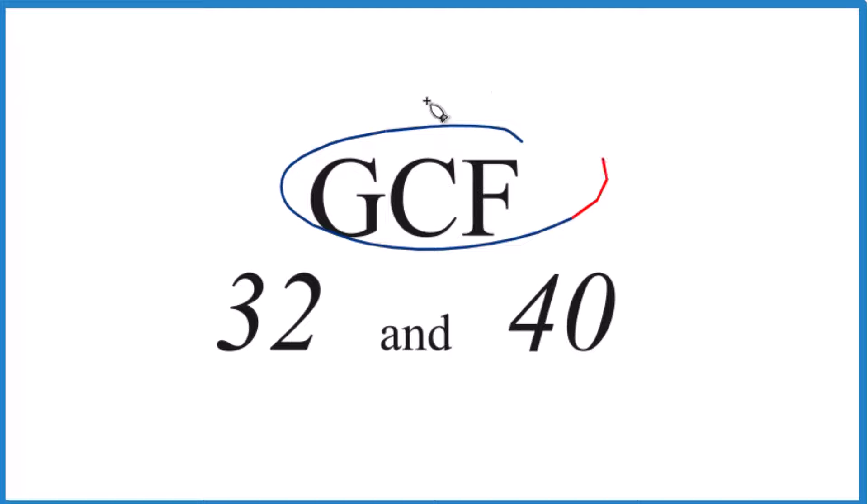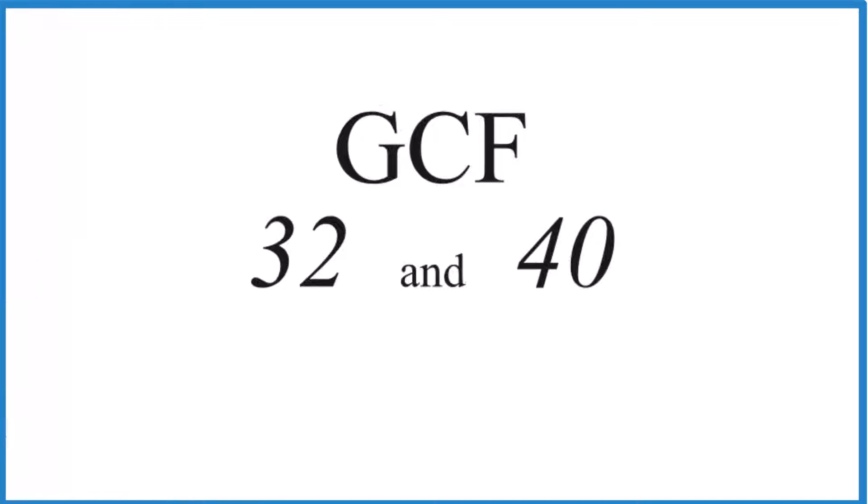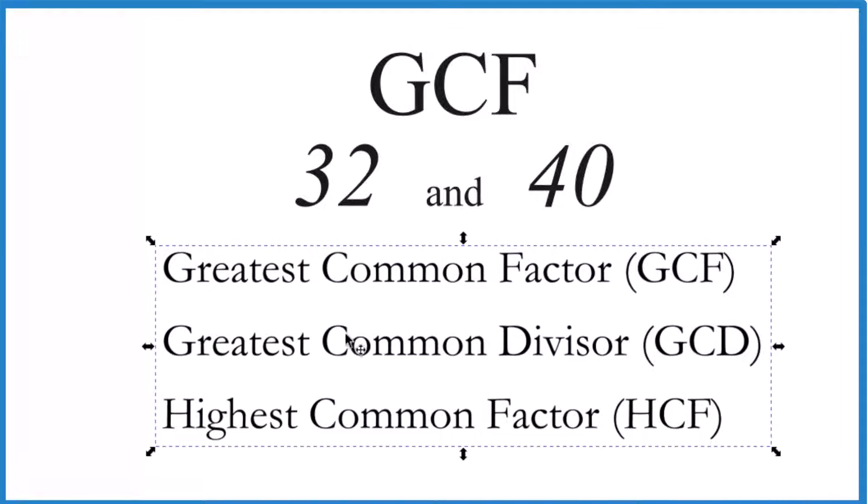If you need to find the greatest common factor, that's the GCF, for 32 and 40, here's how we could do it. The GCF is sometimes called the greatest common factor, greatest common divisor, or highest common factor. These are the same. Let's go with GCF.